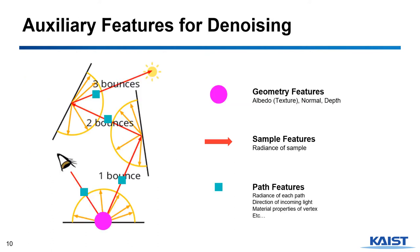Luckily, in the case of path tracing, we can achieve useful information while rendering. This information can be divided into three scales. First is the geometry feature, which contains geometric information such as textures, normals, and depths of the first bounce surface. Second is the sample feature, which contains the whole information of the sample such as the radiance. Third is the path feature, which contains information of each bounce in sequential order. The deeper the feature we use, the more time and memory it requires, but the higher quality denoising we can achieve.